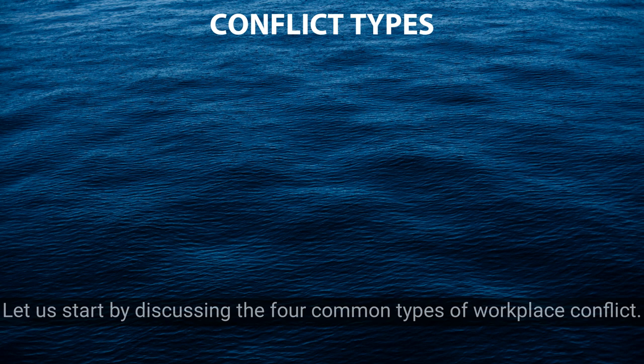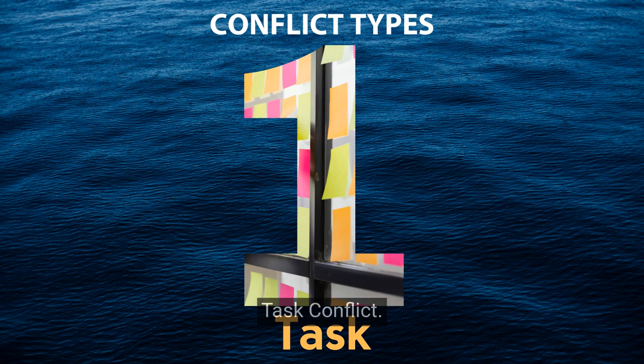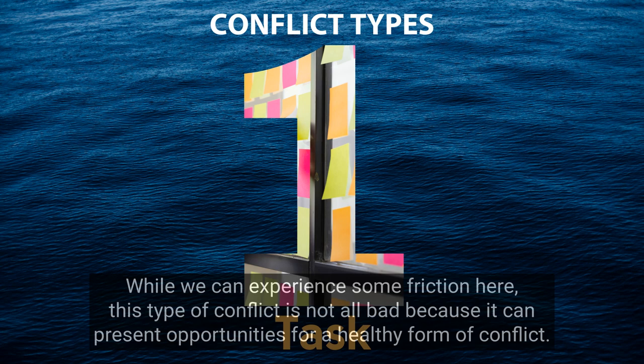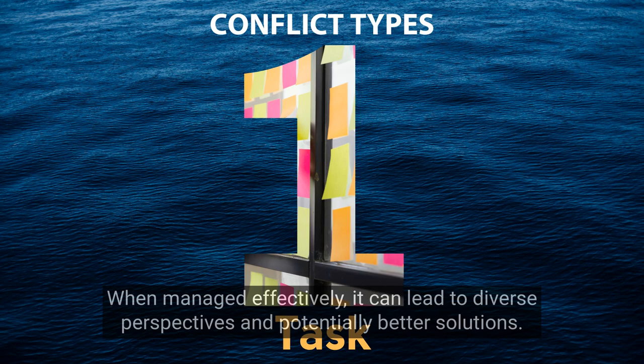Let us start by discussing the four common types of workplace conflict. Type 1: Task conflict. This is when we cannot agree on how to get something done. It arises from disagreements over how to complete a task, approach a project, align on project timelines, or prioritize work activities. This type of conflict is not all bad — when managed effectively, it can lead to diverse perspectives and potentially better solutions.